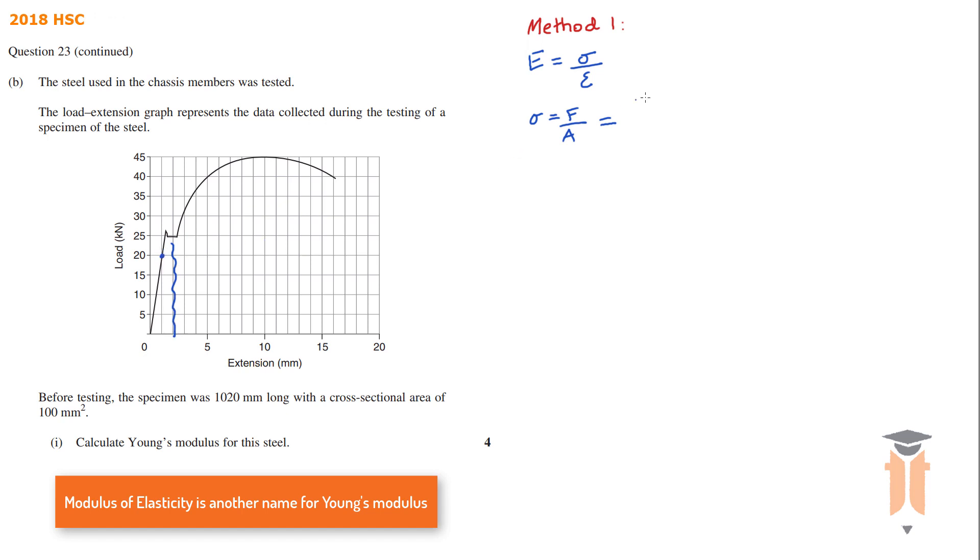So the force we're going to be using is 20 kilonewtons which I need to convert to newtons. So that becomes 20,000 newtons over the area which is given to us in the question and that's 100 millimeters squared. And that gives me an answer of 200 megapascals.